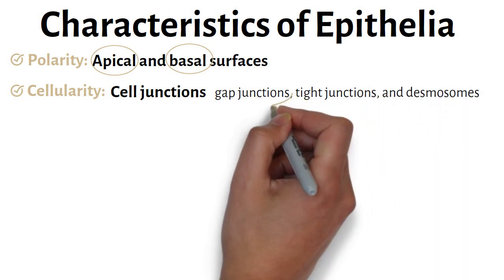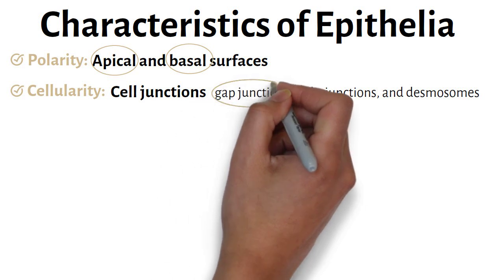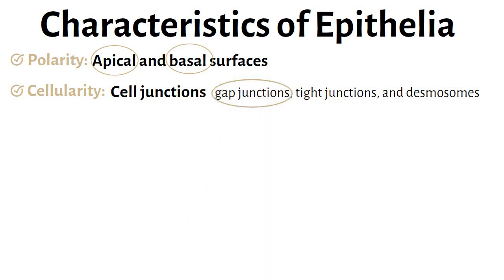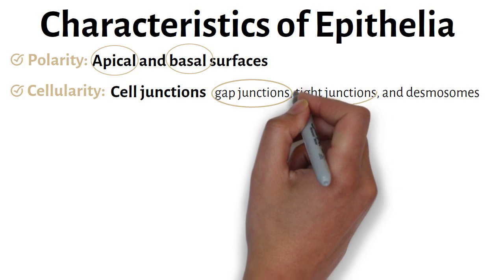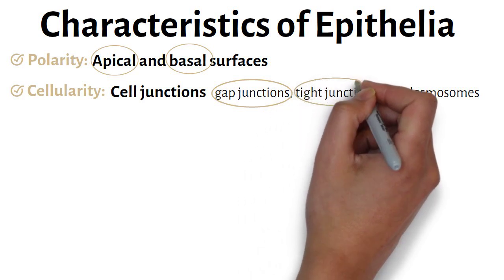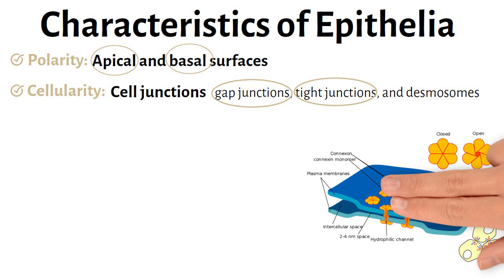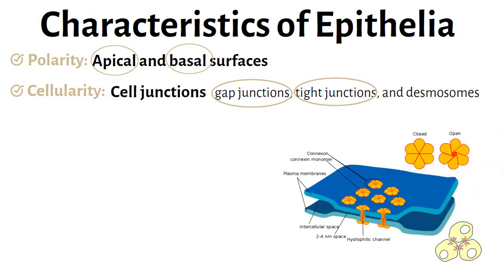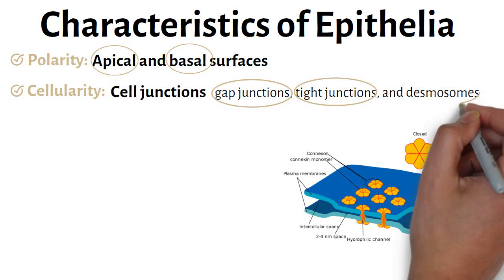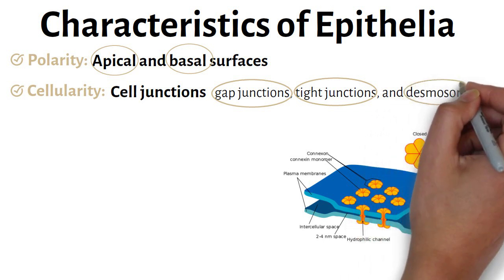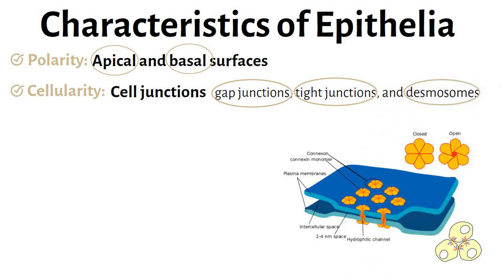Gap junctions allow rapid communication by permitting small molecules and ions to pass through. Tight junctions are located between two plasma membranes and prevent passage of water and solutes, and keep enzymes, acids, and wastes in the lumen of the digestive tract. Desmosomes adhere cell membranes to neighboring tissue cells and allow attachment to the basement membrane.